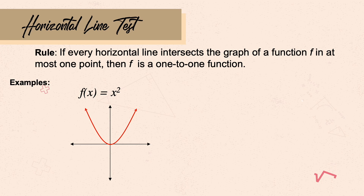The second method is the horizontal line test. The rule is: if every horizontal line intersects the graph of a function f at most once, then f is a one-to-one function. For example, the graph of f(x) = x² is not one-to-one because placing a horizontal line anywhere intersects the parabola twice.